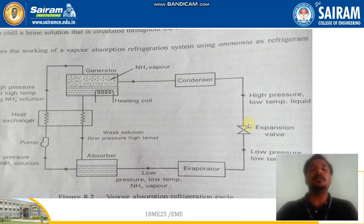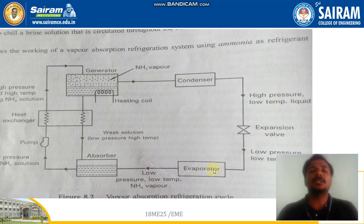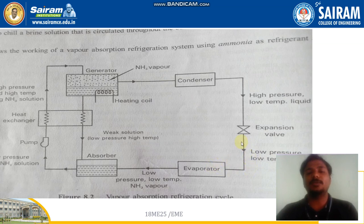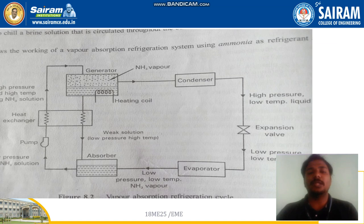Now we are going to discuss the working principle of this refrigeration system. In the evaporator, we are going to use ammonia as the refrigerant for this vapor absorption refrigeration cycle. The refrigerant present in the evaporator tube is ammonia, which is used in the evaporator.